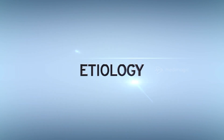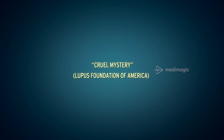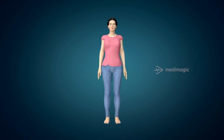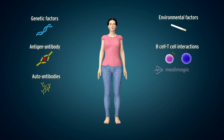Systemic lupus erythematosus (SLE) has been tagged 'the cruel mystery' by the Lupus Foundation of America on account of its complex and partially known etiology. In SLE, many genetic susceptibility factors, environmental triggers, antigen-antibody responses, B-cell and T-cell interactions generate and perpetuate autoimmunity, leading to auto-antibody production.